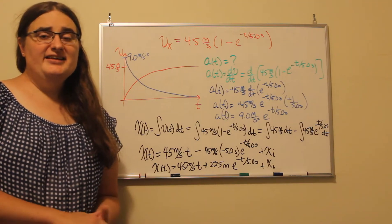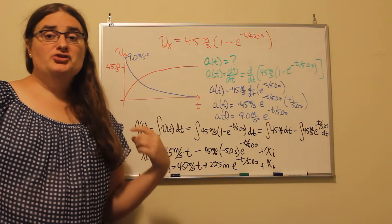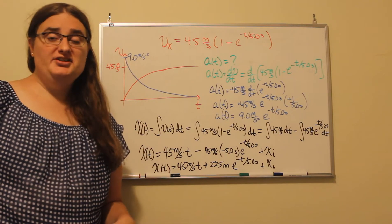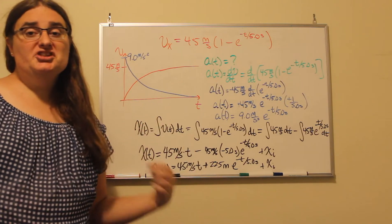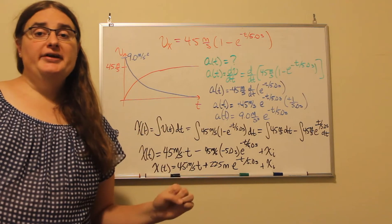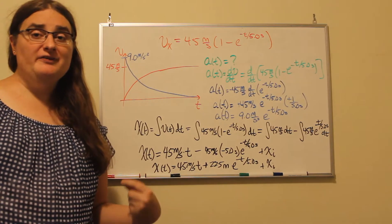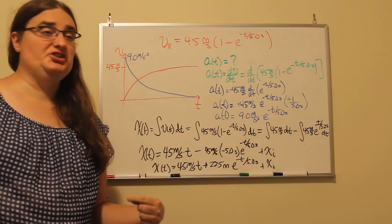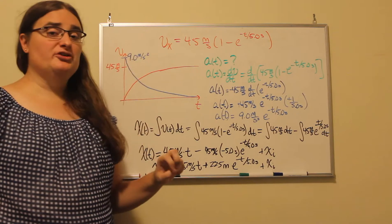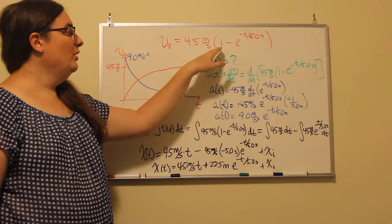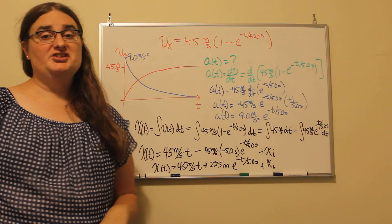Let's take a look at an example of using calculus to solve for kinematic equations when we're given either the position, velocity, or acceleration. Here we're given the velocity as a function of time and we need to find the acceleration and the position. Our velocity as a function of time is equal to 45 meters per second times the quantity 1 minus e to the negative t divided by 5.0 seconds.